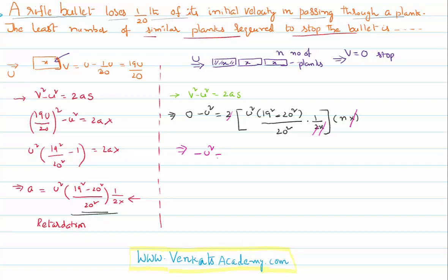So what is remaining? -u² = u² × (19² - 20²). Using a² - b² as (a + b)(a - b), I will write that as (19 + 20)(19 - 20)/(20²) × n. So this u² and u² also can be cancelled. That implies -1 = (19 + 20) × (19 - 20)/(20²) × n. That is 39 × (-1)/400 × n. So this minus and this minus also gets cancelled. Ultimately, n = 400/39.